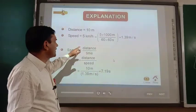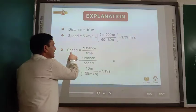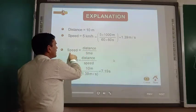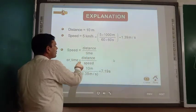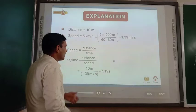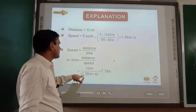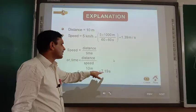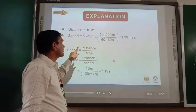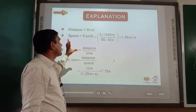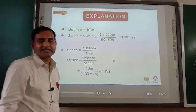Speed equals distance divided by time. Here speed is given, so time equals distance divided by speed. Distance is 10 meters and speed is 1.39 meters per second. Therefore, the time taken to cover the distance equals 7.19 seconds.